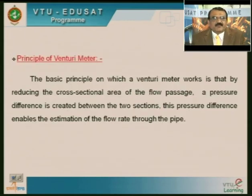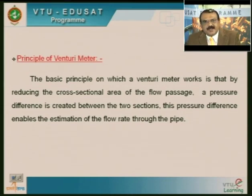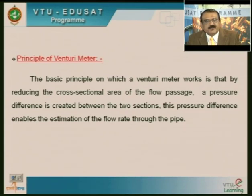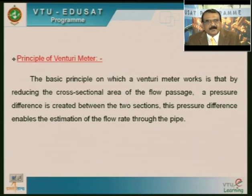The basic principle of the Venturimeter is: by reducing the cross-sectional area of the flow passage, a pressure difference is created between the two sections. If you measure the pressure difference between these two sections, the discharge through the pipe can be easily determined. Reducing the cross-sectional area creates a pressure difference; measuring that pressure difference allows us to determine the discharge through the pipe or the Venturimeter.